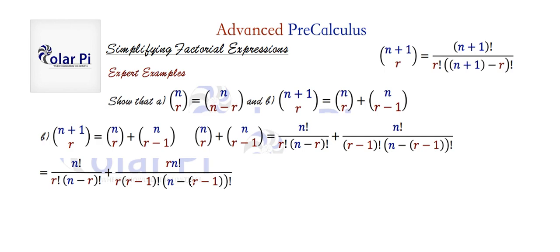Notice that if we distribute the minus sign to get rid of the parentheses around r minus one, it'll read n minus r plus one, which is the same as n plus one minus r. So the denominator of this second quotient is identical to this part of the denominator of where we need to go. n plus one minus r factorial is the bigger factorial compared to n minus r factorial — in fact, it's exactly one more. So we need to multiply the first quotient by n plus one minus r in the numerator and denominator.